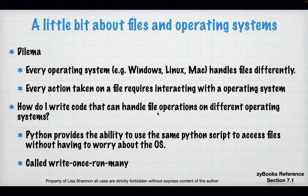So a little bit about files and operating systems. Every operating system handles files differently — every single one of them. Microsoft handles it different than Linux. Linux and Mac are relatively close, but not completely. So how do we make it so that I can write one Python program that can run on Windows, Linux, or Mac? Well, the great thing is that Python neutralizes all of this stuff with operating systems, and we will get into that more a little bit later.